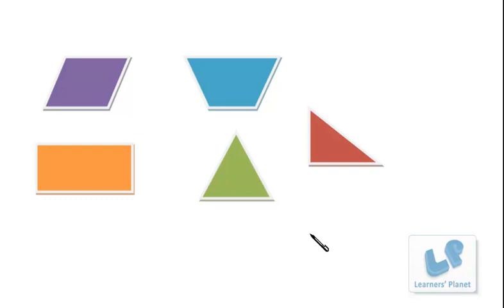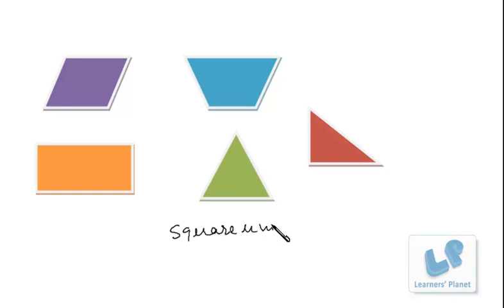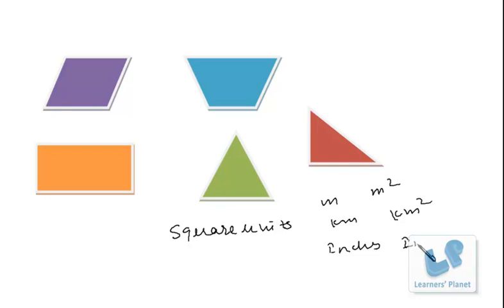Area is always calculated in some unit, and generally the units are centimeters, meters, inches, or maybe kilometers. But how do we represent these units? The areas are represented in square units — we have to be very careful about that. We use meter, kilometer, inches, but these are linear units. If we have to represent the areas, then we have to write meters square, kilometers square, inches square, or maybe square feet. So areas are represented in square units.